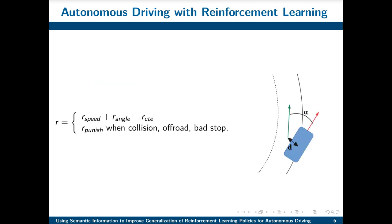Outputs are the action — acceleration, brakes, steer — and the value. The value is an estimation of how good a state is, how much reward can be expected from this state. The reward we use for training is a sum of three terms. One term is about speed — we have a target speed, and the closer our car gets to that speed, the better. The two other terms are about the angle the car makes with the road and the distance to the road center — for both, the smaller the better. We also have a punishment, a negative reward, in case of collision, going off-road, or a bad stop. A bad stop is when the car stops for no reason. Simply training this network with all these parameters and rewards leads to poor results and very bad generalization, so we need to help the training.